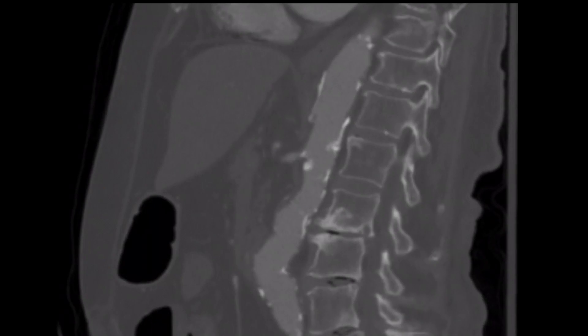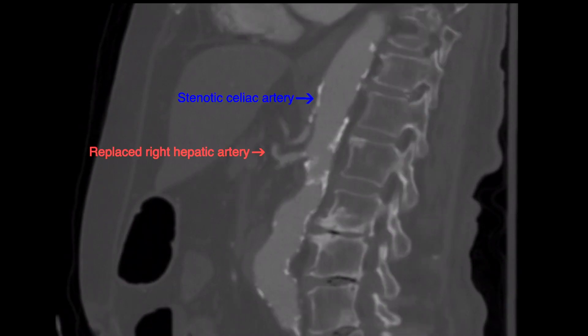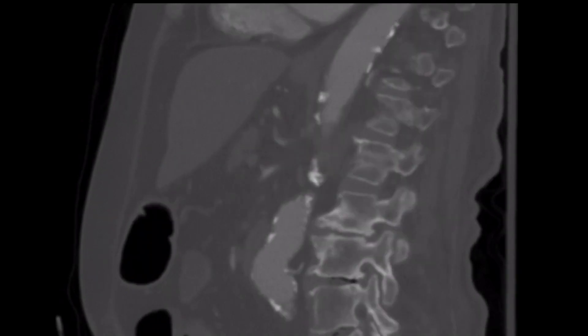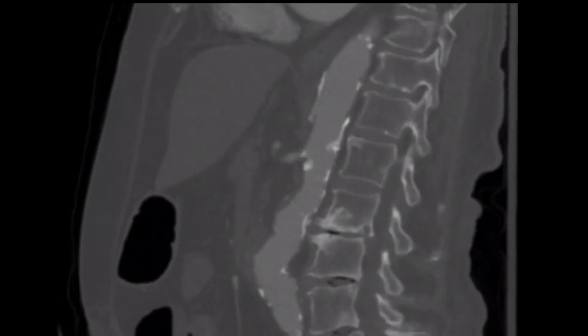She was also found to have a replaced right hepatic artery coming off the superior mesenteric artery, and a highly stenotic celiac artery as visualized on these sagittal images of the CTA. Also demonstrated here is the severely stenotic origin of the superior mesenteric artery.